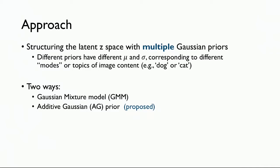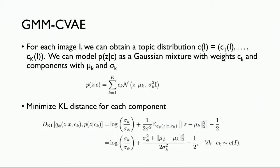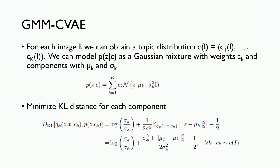The distribution assumption is too simple for the random variable to capture the complexity of real variation. The idea here is: can we structure the latent space with multiple Gaussian priors, where different priors have different mu and sigma according to different modes or topics of the image content? There are two ways: a Gaussian mixture model, and a second approach proposed by this paper called additive Gaussian priors. For the Gaussian mixture model, each image obtains a topic distribution C1 to Ck, where each C indicates the weight of the topic, and each component has mu and sigma.